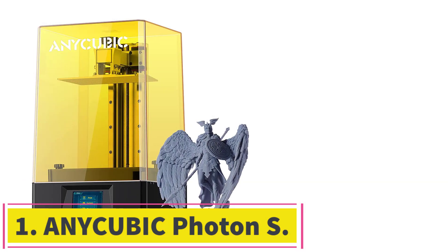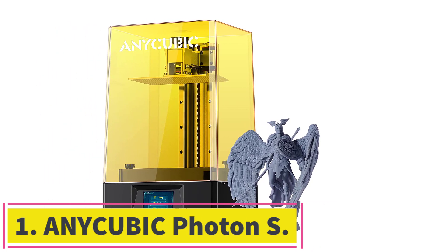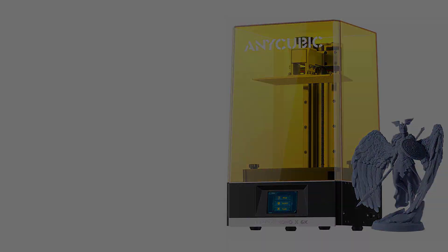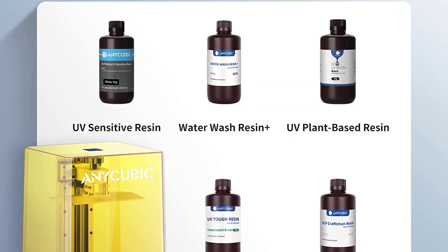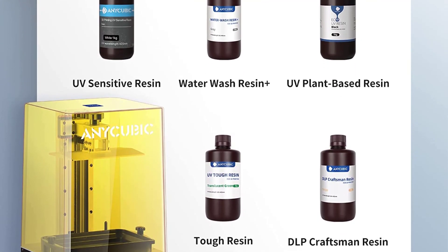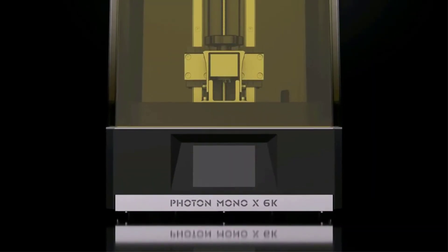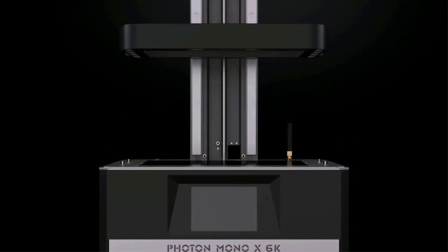Starting at number 1, Anycubic Photon S. This is a DLP 3D printer for jewelry, which uses a technology similar to SLA but is less expensive. It's more than twice cheaper than leading SLA brands and has the same price as many fused deposition modeling (FDM) printers.